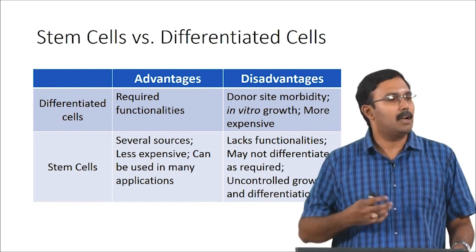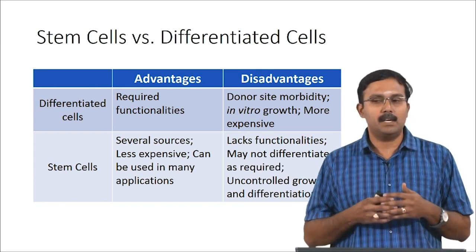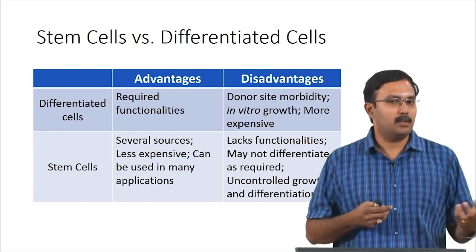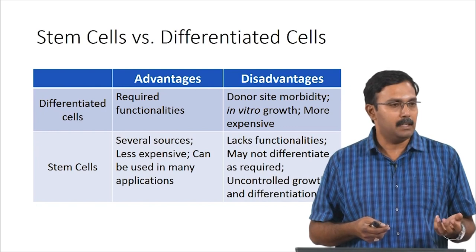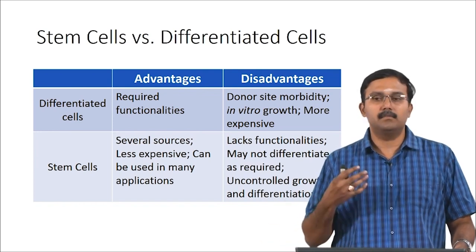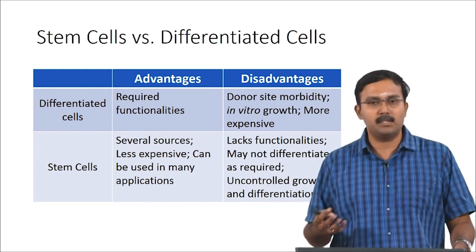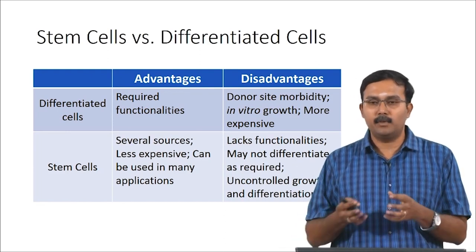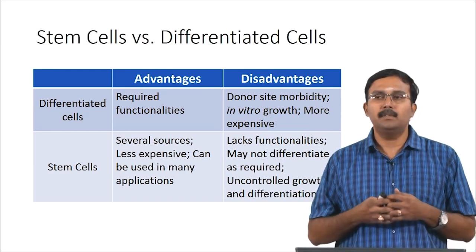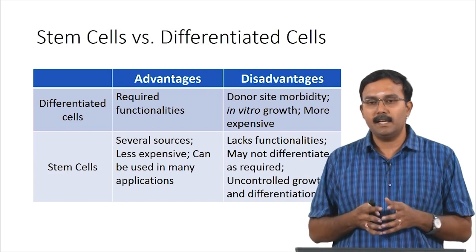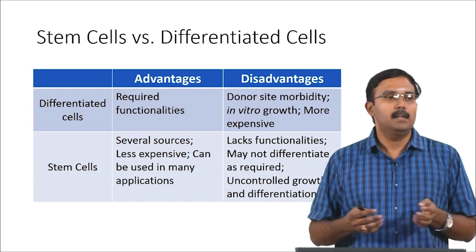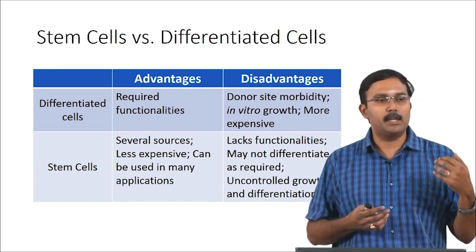Differentiated cells and stem cells also have their own advantages and disadvantages. Differentiated cells have the required functionalities needed for the tissue to function as expected. The disadvantages are donor site morbidity, and in vitro growth is more difficult — you cannot culture them for multiple passages; they die after some time or are more expensive. Stem cells, on the other hand, are less expensive and have different sources. One type of stem cell can be differentiated into different cells for different applications. The disadvantage is they do not have the required functionality and may not differentiate as required — there could always be issues with differentiation, especially when differentiation is expected to happen in vivo.